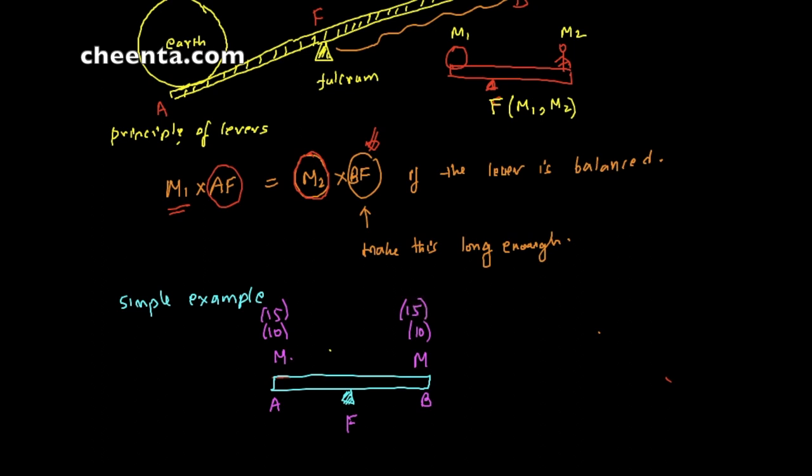So in that sense, the mass point coordinate of F would be (10, 10), or it could also be (15, 15), and so on. So it's not unique, but if you take away a common factor then it would be unique. So if you take away 15, for example, then it's (1, 1). If you take away 10 from here, it's also (1, 1). So after taking away all the common factors, it would be unique.